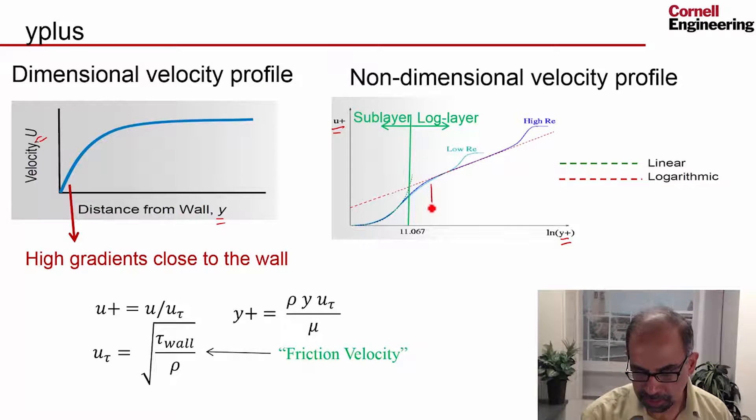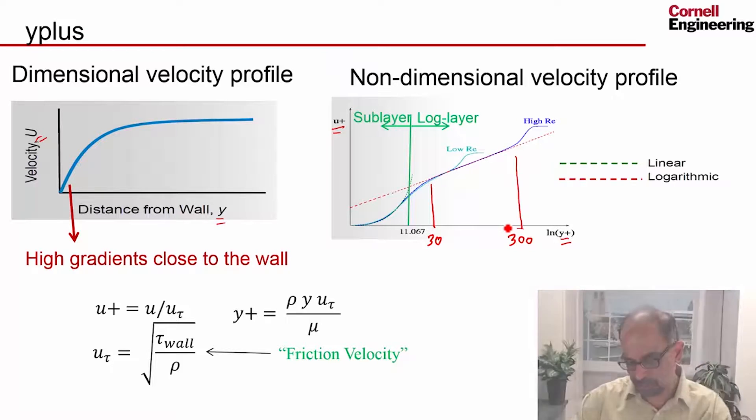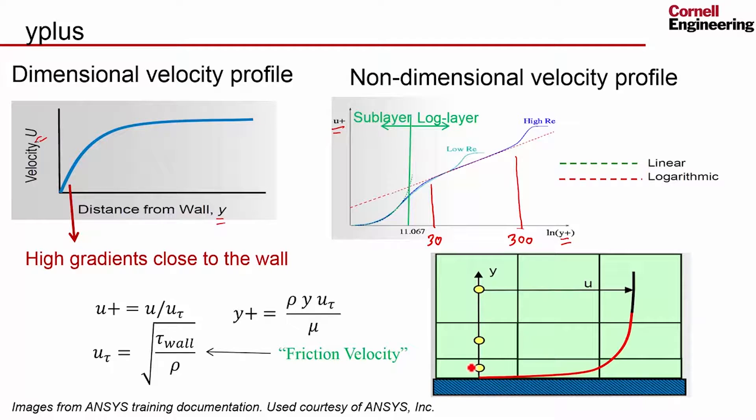And in fact, if your Y plus is between in this region where you're getting that linear variation, so this tends to be 30 and this is 300. And we are using standard wall functions, in which case we want our Y plus range to be between 30 and 300, so that our first cell center is in the log layer. So if we have that Y plus range, it means that the first cell center is in the log layer, and it can assume that U plus goes as log Y plus, and we'll use that to calculate the wall shear. That's a much more accurate calculation of wall shear than if you use the cell center values. Because of the high gradients, that will give you a high level of error.